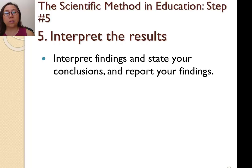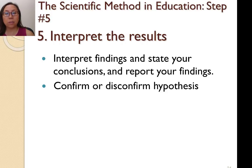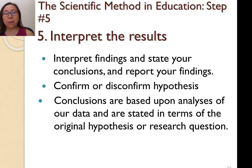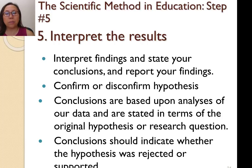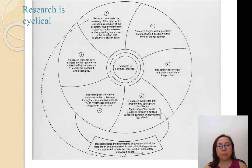The final step in scientific method is to interpret the results — interpret the findings, state your conclusions, and report your findings. By doing so, you confirm or disconfirm the hypothesis. Conclusions are based upon analyses of data and are stated in terms of the original hypothesis or research question. The conclusions should make it very clear whether to reject or support the hypothesis created at the beginning of the study.